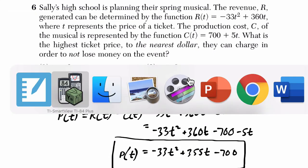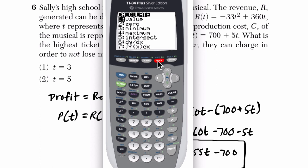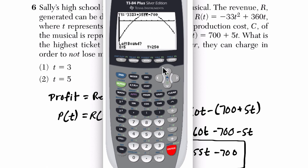How do we find that? One easy way is to hit second trace. And I'm going to go for a zero. That is a zero of the function.